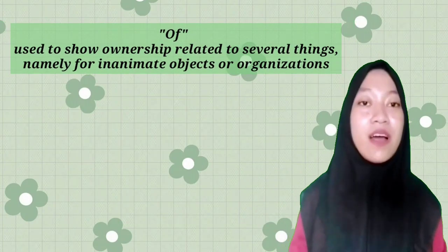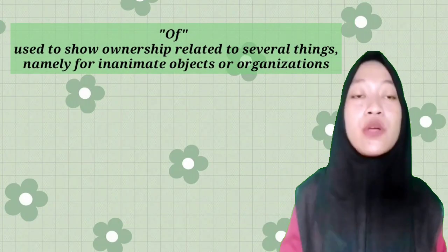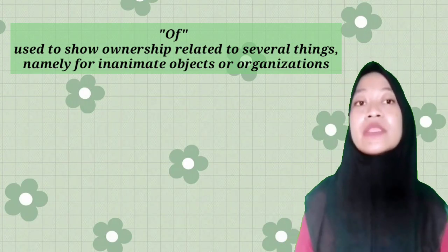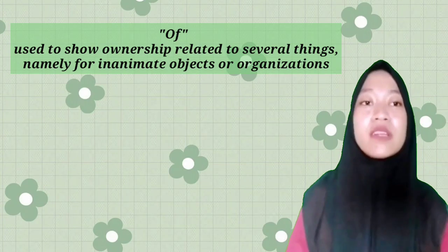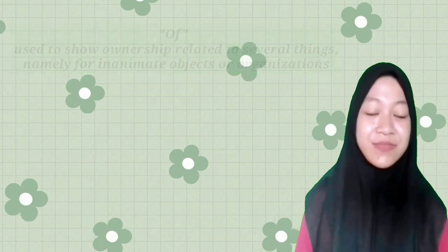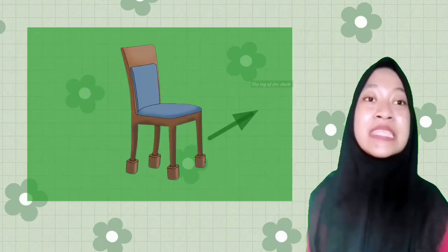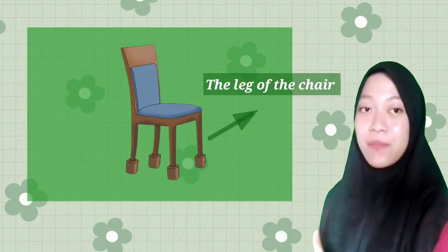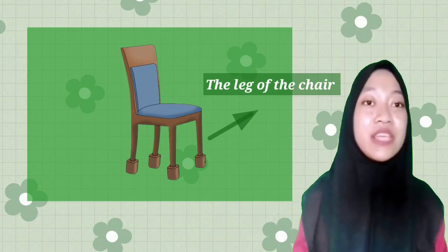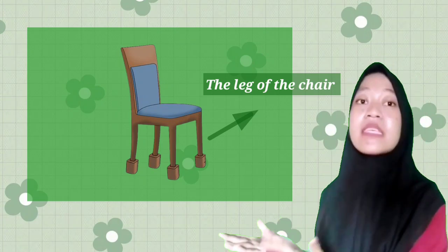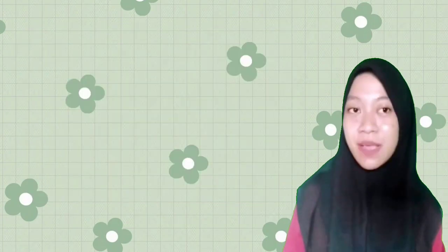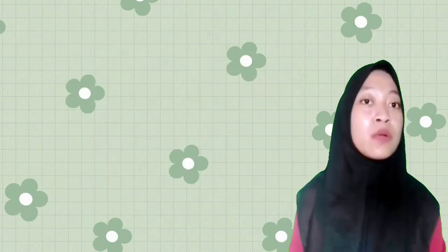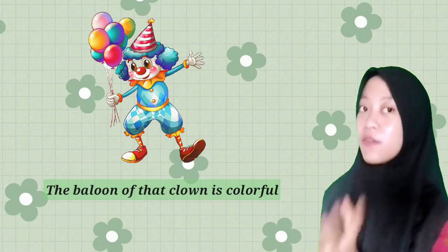Another example is 'the cat's pal' or 'my father's house is really nice.' The next is 'of' — 'of' is used to show ownership related to inanimate objects or organizations. For example, 'the leg of the chair' refers to an inanimate object. Another example is 'the balloon of that clown is colorful.'